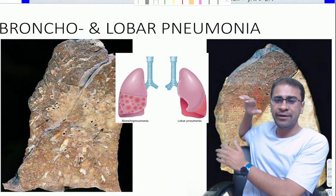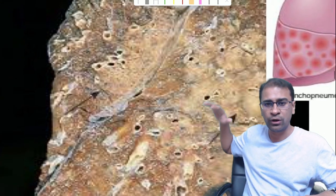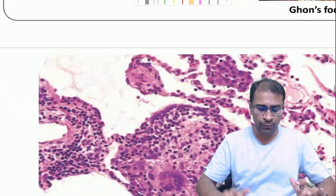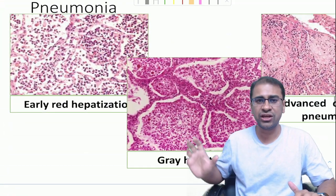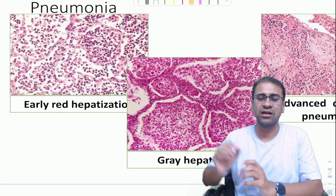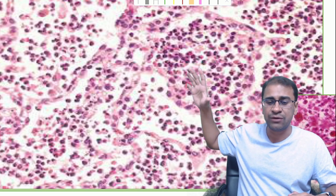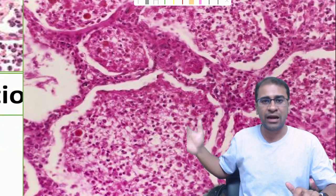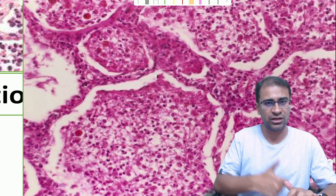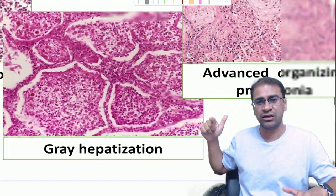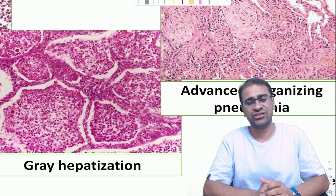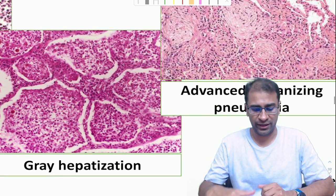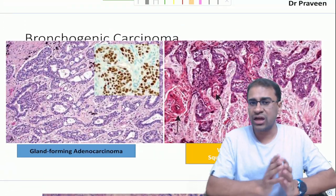Moving to pneumonia: it can be a complete lobar pneumonia or bronchopneumonia, which shows patchy involvement. Pneumonia occurs in three main stages: first there is congestion, then early red hepatization — where RBCs with fibrin give a liver-like consistency — then gray hepatization, where RBCs break down leaving fibrin. Finally comes resorption of the entire stage, or it may go into a fibrotic stage. So the two types are bronchopneumonia and lobar pneumonia.